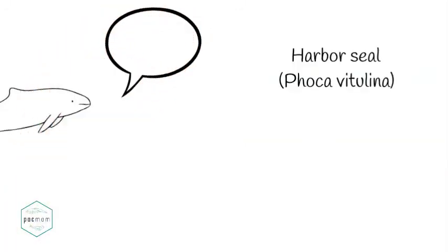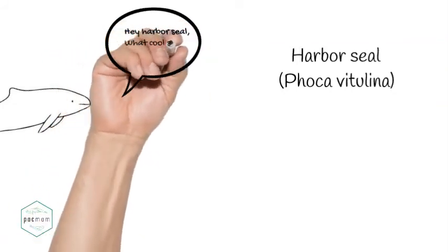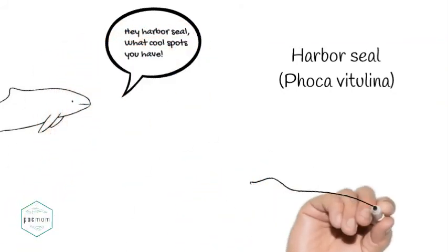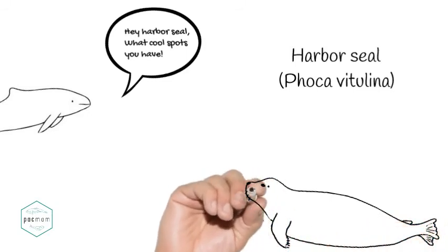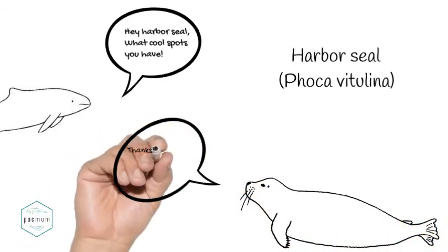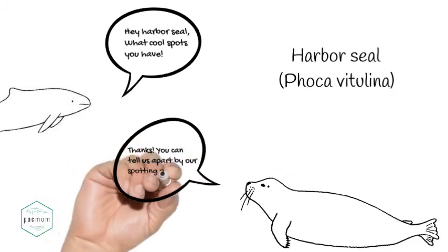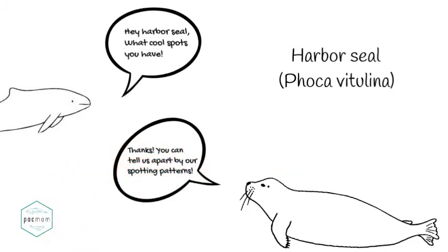Our last stop is the harbor seal. These guys are smaller than the other pinnipeds common in the Salish Sea, measuring 5 to 6 feet, up to 285 pounds, and living 25 to 30 years. They are one of the most common marine mammals in the U.S. West and East Coasts, and their spotting patterns are unique, allowing us to identify individuals.